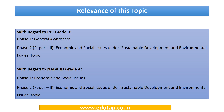Phase 2, Paper 2 covers Economic and Social Issues under Sustainable Development and Environmental Issues. With respect to NABARD Grade A, it will be in Phase 1 Economic and Social Issues, and Phase 2 Paper 2 Economic and Social Issues under Sustainable Development and Environmental Issues.